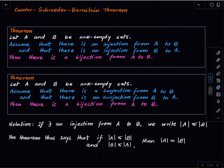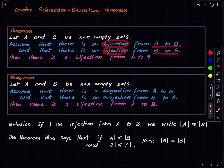What does it say? It says that suppose we have two non-empty sets A and B, and suppose that there is an injection from A to B and there is an injection from B to A. Then there is a bijection from A to B. It's a very, very fundamental and interesting theorem.